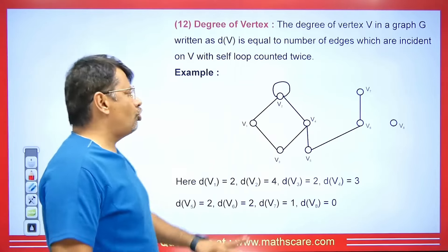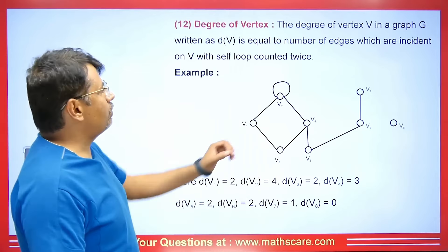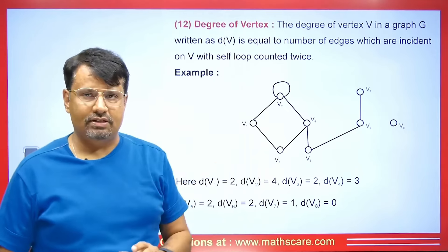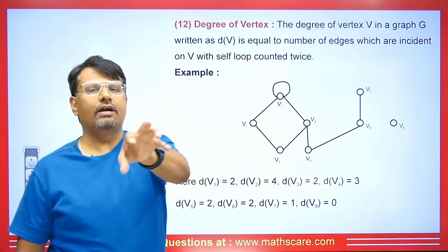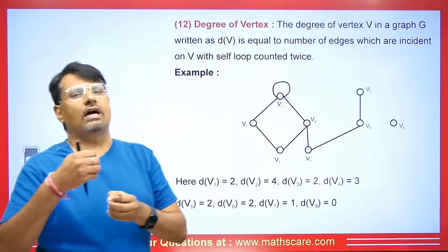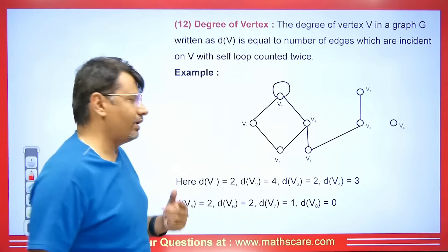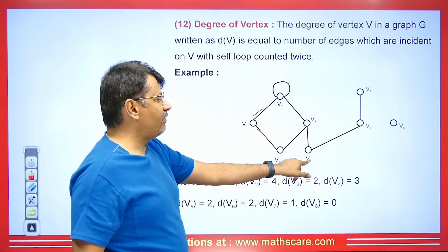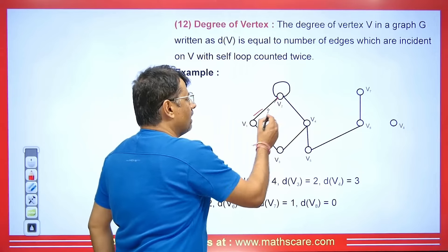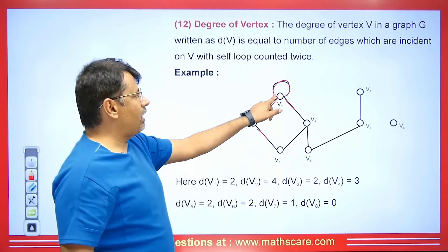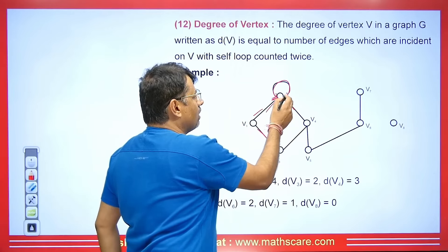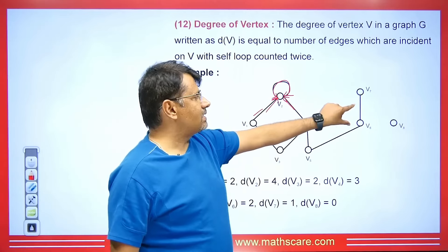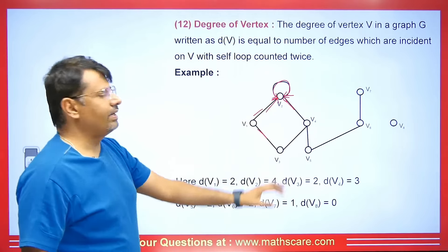Now we will talk about the degree of a vertex. The degree of vertex V in a graph G is written as D(V) and equals the number of edges incident on V, with a self-loop counted twice. For example, if V1 has two edges connected, its degree is 2. V4 has three degrees, V5 has two degrees. For V2, counting the self-loop as two plus one more edge gives a degree of four. V6 has degree two, V7 has degree one.